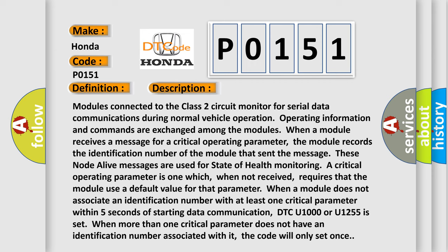When a module does not associate an identification number with at least one critical parameter within five seconds of starting data communication, DTC U1000 or U1255 is set. When more than one critical parameter does not have an identification number associated with it, the code will only set once.